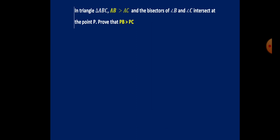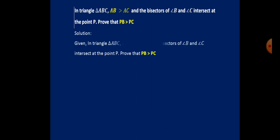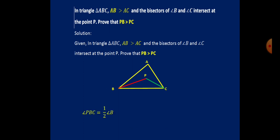Here is the triangle. The red line PB must be shown to be greater than PC. Angle PBC equals one half of angle B, as it is the bisector. Similarly, angle PCB equals one half of angle C, and the reason is the same — PC is the bisector of angle C.